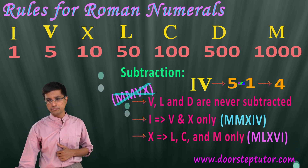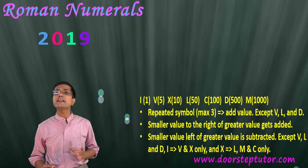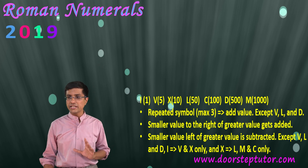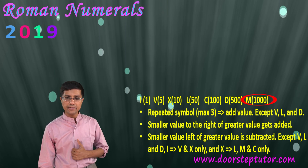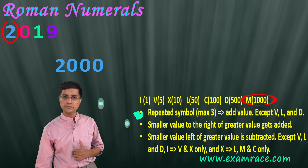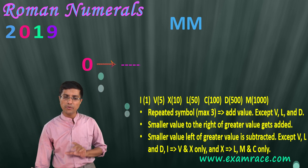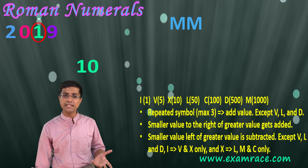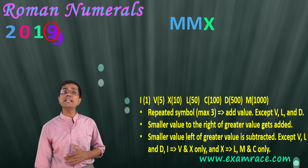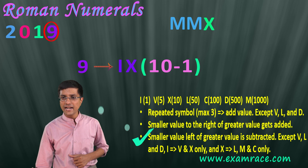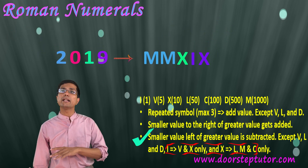Let's do some conversions. Take the year 2019. To convert to Roman numerals, first take M for 1000, but we need 2000 so we repeat it: MM. Zero is meaningless so we skip it. The 1 in the tens place means 10, written as X. Then 9 in the ones place is written as IX — placing I before X means 10 minus 1, which is 9. So 2019 is MMXIX.